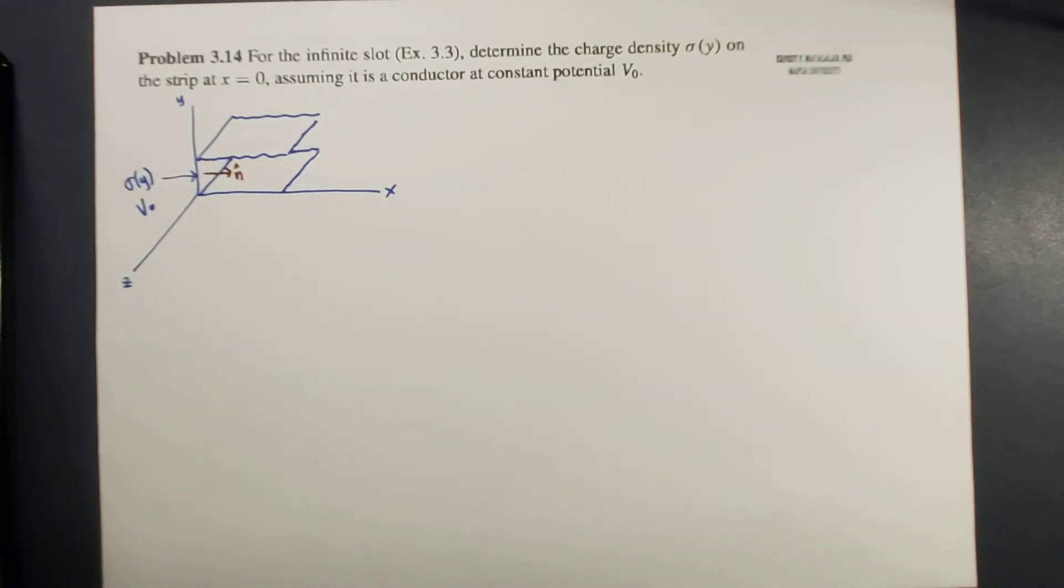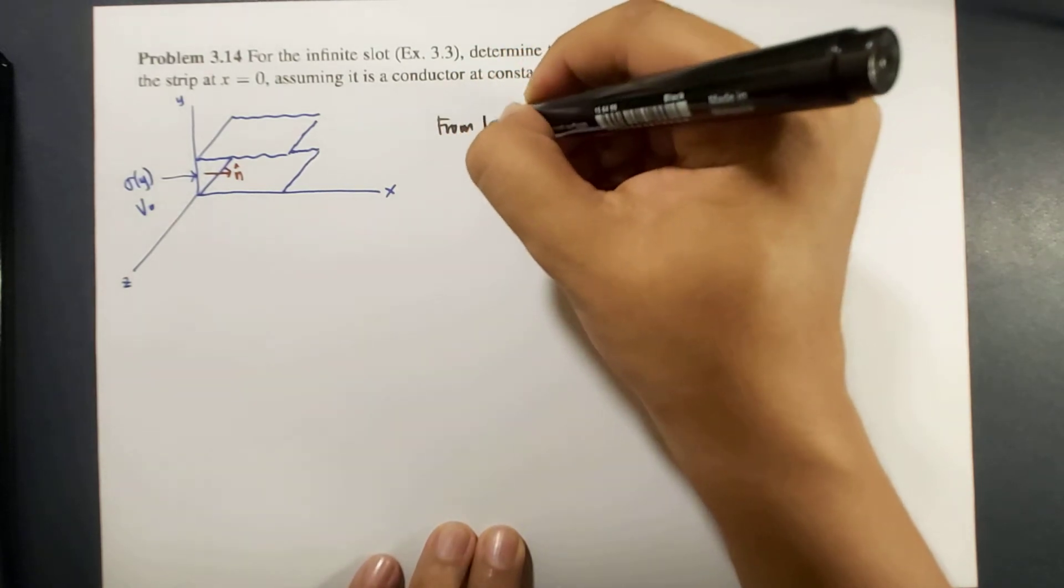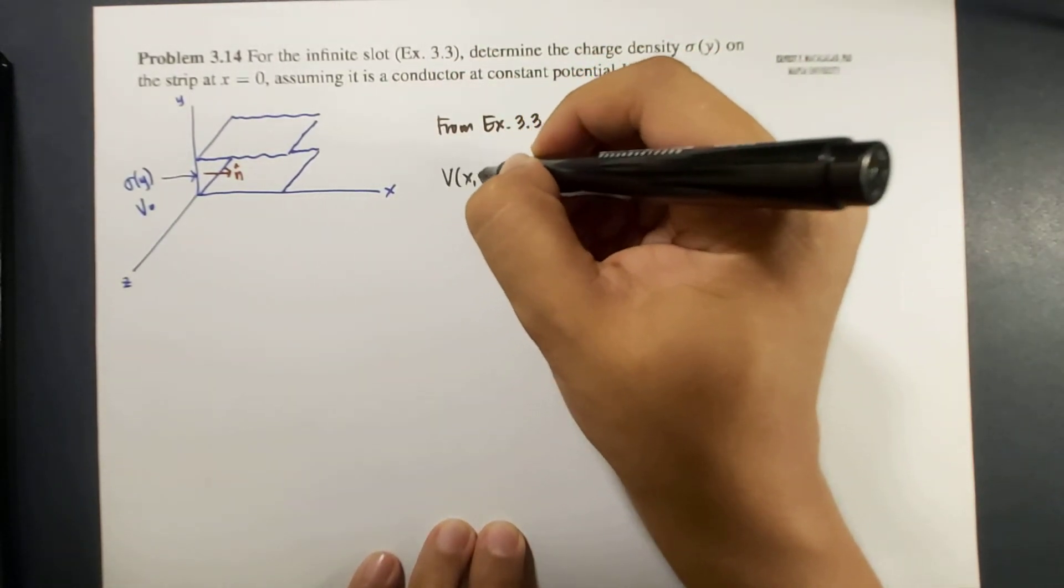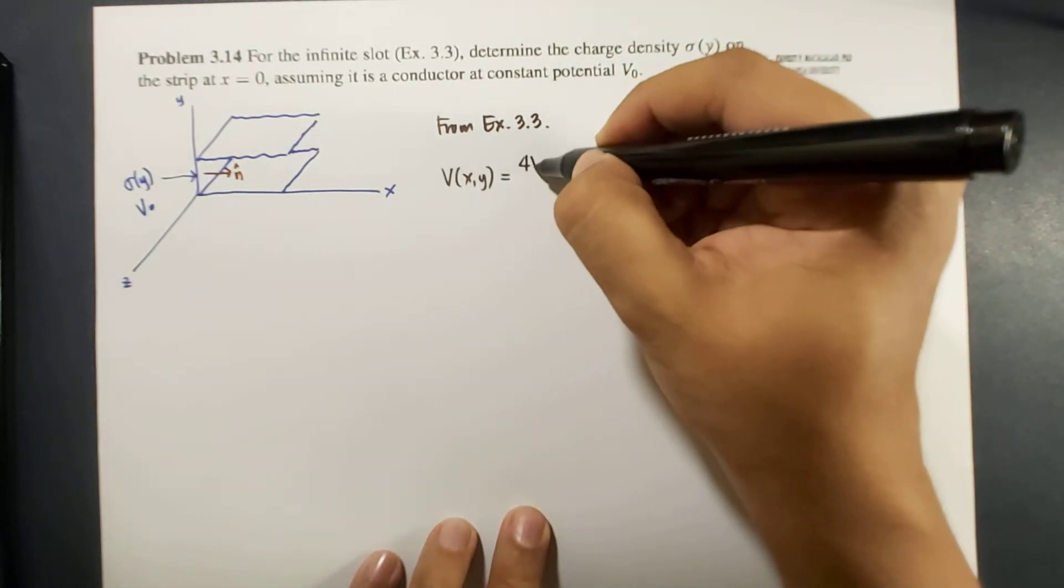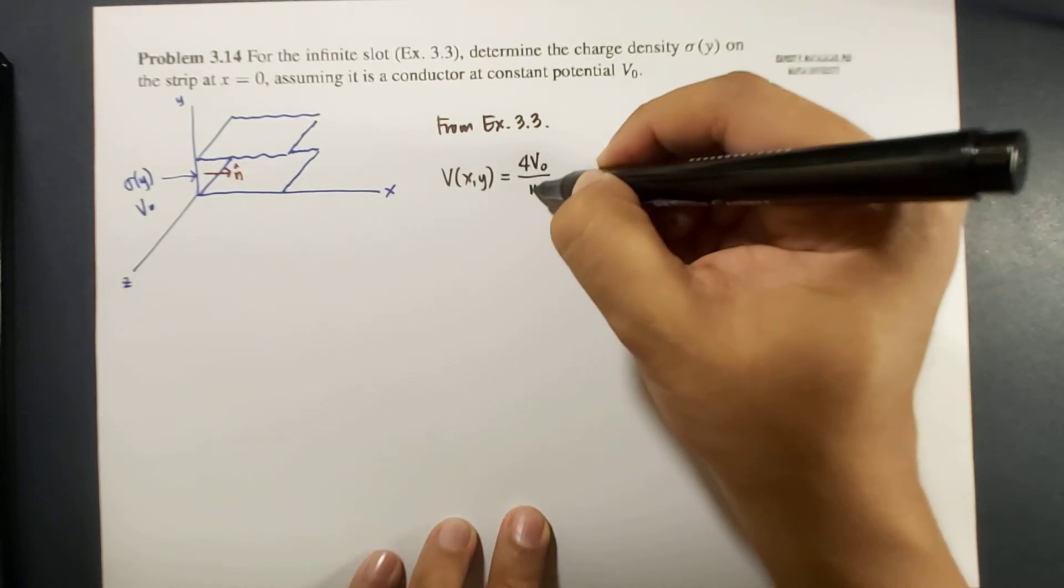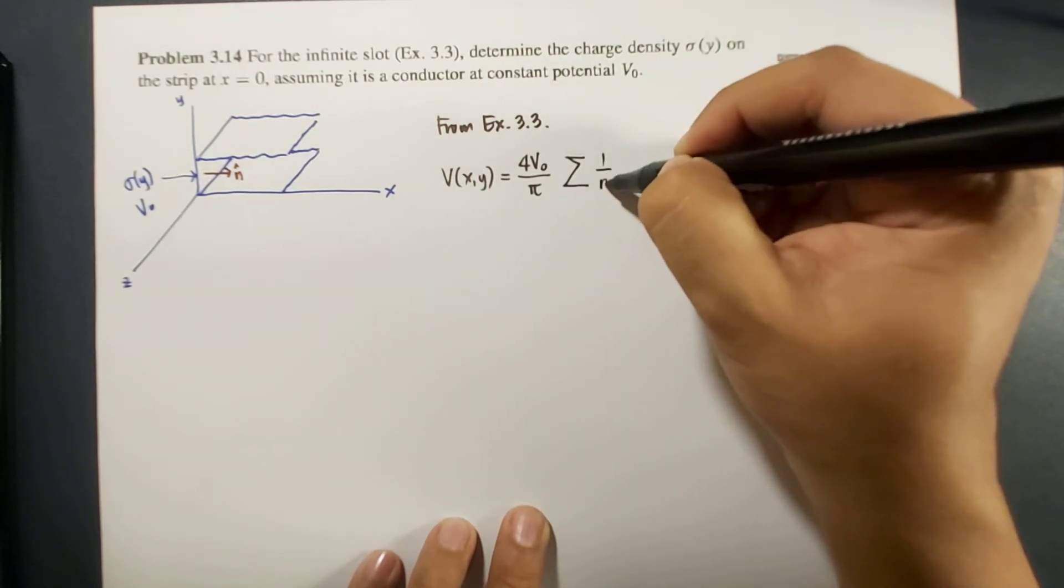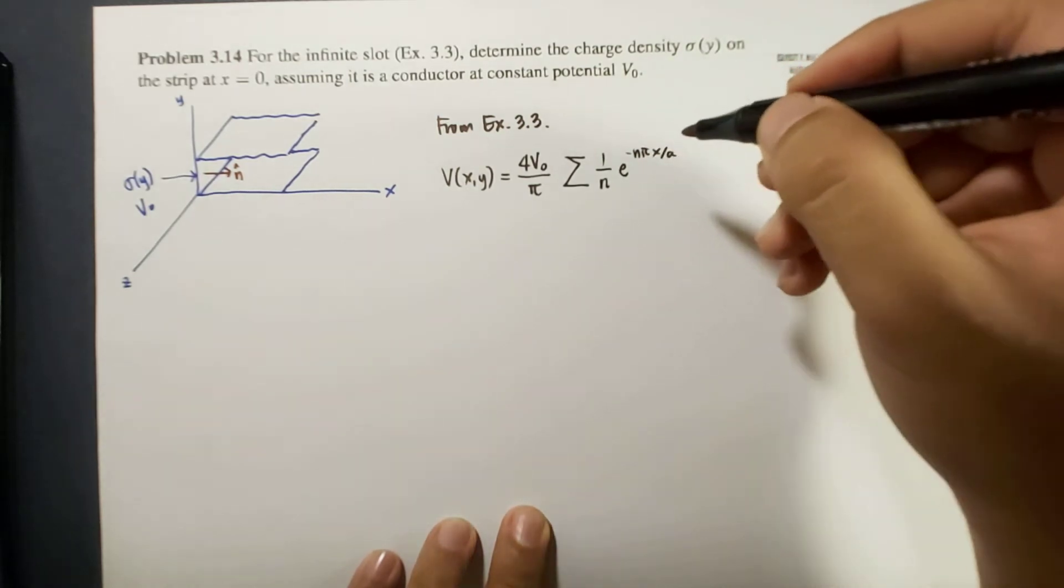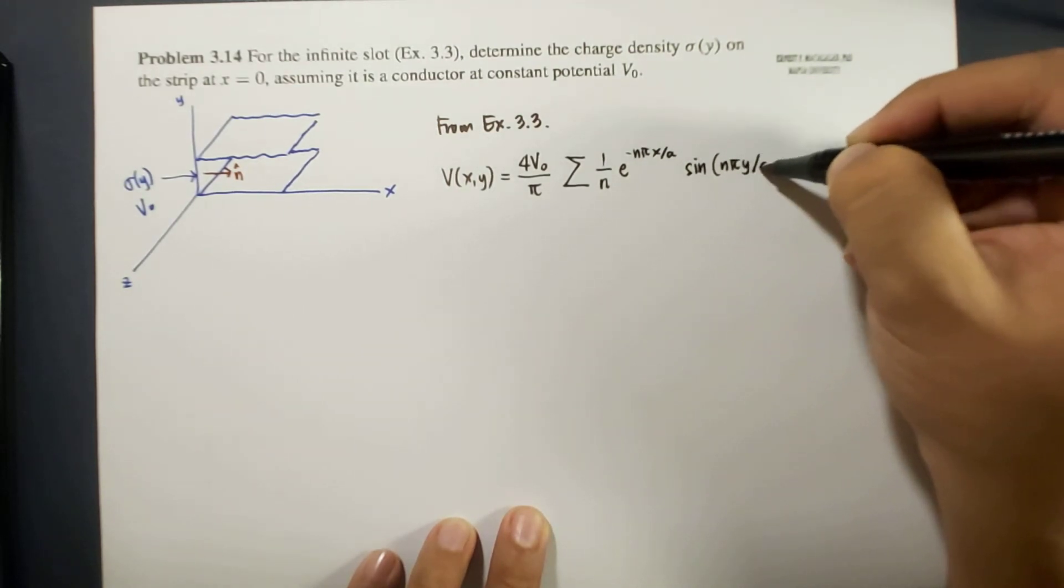So from our solution, from example 3.3, the potential depends on x and y, and that is equal to 4V0 over pi, times the sum of 1 over n, e to the negative n pi x over a, times sine n pi y over a.